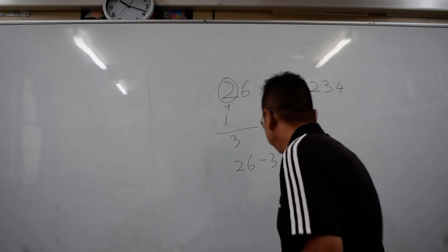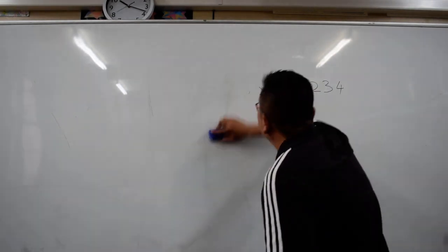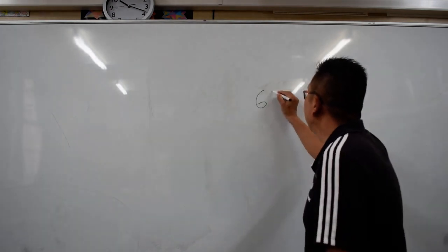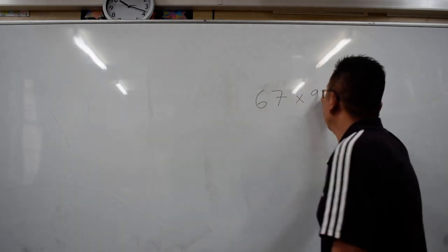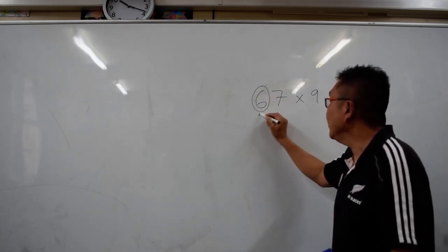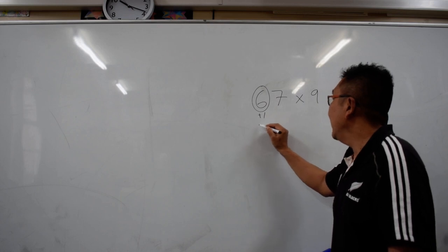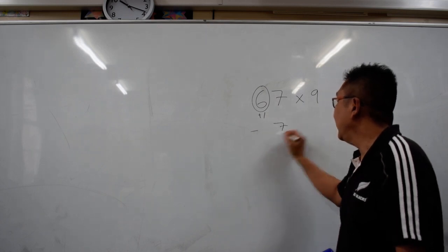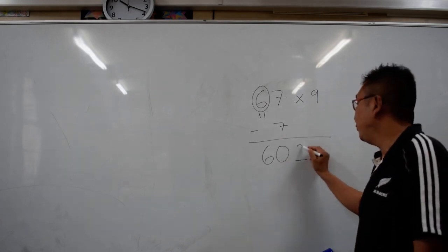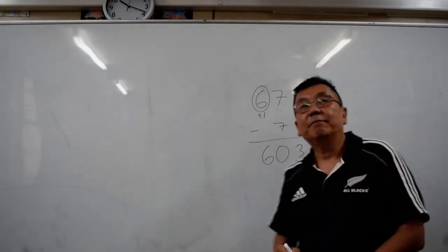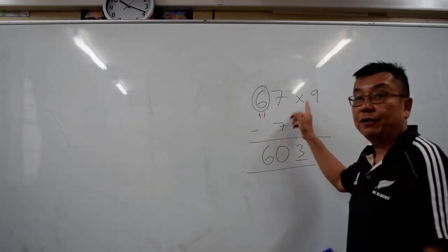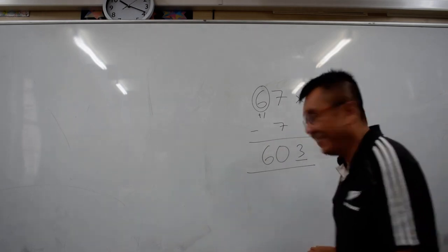Now we do another example. 67 times 9. So what you do? You just need to increase the 6 by 1, so it becomes 7. And then you minus 7 from there, it becomes 60. And the last number has to be 3 because these 3 numbers must add up to 9. So that is how you do a 2 digit multiplication of 9.